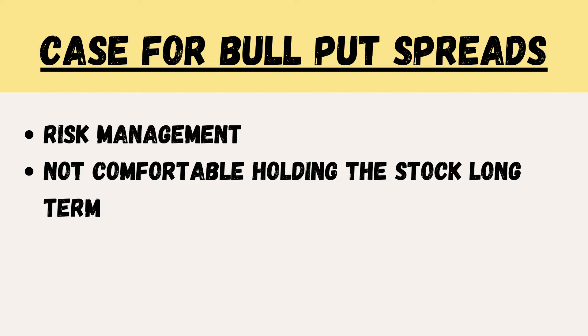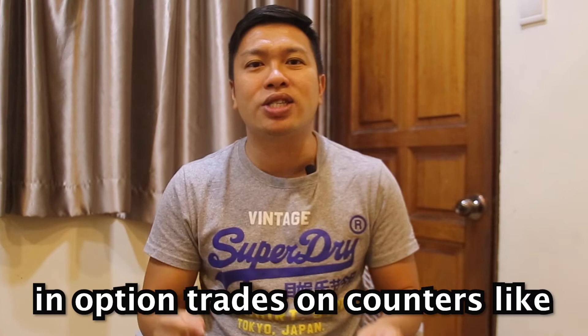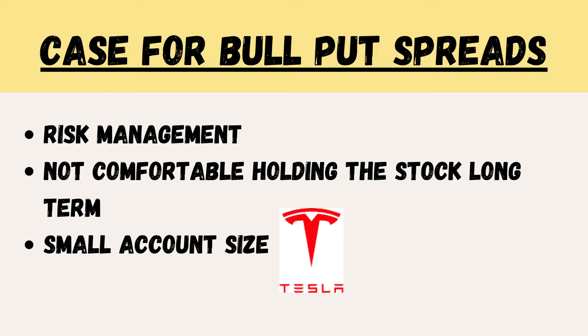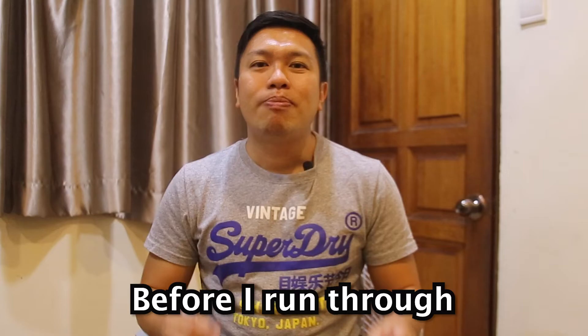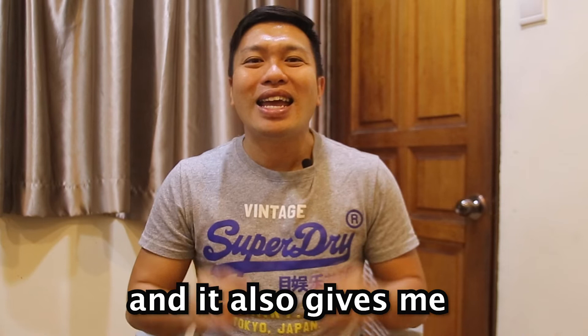I do find credit spreads to be a very effective strategy, especially for people with very small option trading accounts. With a small amount of capital, you can participate in option trades on counters like Tesla, Microsoft, and Salesforce without needing to fork out huge amounts of cash. Before I run through the three scenarios that will happen at expiration, don't forget to hit the like button — it greatly helps the channel and encourages me to create more content.